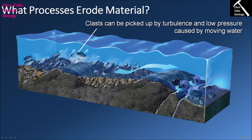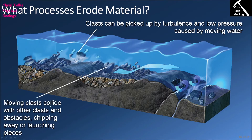Rivers are constantly eroding both the bottom and the sides of their channel, causing the river to move over time. One way a river erodes material is by picking up clasts due to turbulence in the water, which creates low-pressure areas that literally pull material off the riverbed. The movement of clasts leads to clasts colliding with each other or with obstacles in the channel, causing clasts to break down over time, and also chipping off material from whatever they strike.